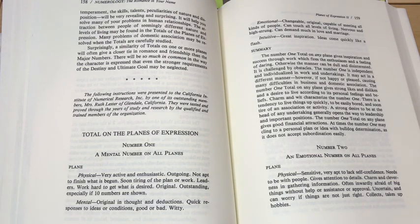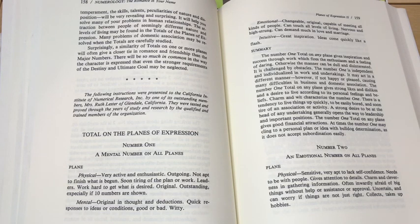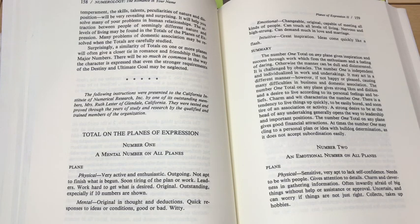So a number one on a physical plane, and again, these are your totals, means you're very active and enthusiastic, outgoing. If you got a one on a mental plane, you have original thought deductions. You're witty. If you got a one on an emotional plane, you're changeable, original, capable of meeting all kinds of people. A one intuitive is great inspiration. Ideas come quickly like a flash.